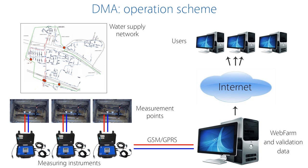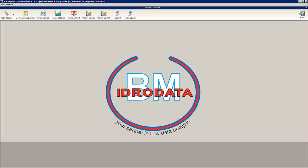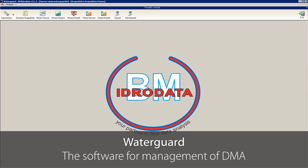The most important steps to implement a correct water network analysis through DMAs are: the design of the water districts using numerical models or from previous knowledge of the system; the choice of a suitable device for flow and pressure measurement; data management; training for system maintenance; data analysis; and the planning of connected services. The data are saved by the installed instruments and analyzed by WaterGuard software, developed by the research and development department of BM Hydrodata, a division of BMI Tecnologie Industriali.